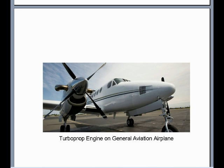Here's an example of a turboprop on a general aviation airplane. The hydraulic oil pressure is at zero, so the blade pitch is in the feather position. Should there be an engine-out condition, the blade pitch will go to feather position to minimize drag and assist in a more successful emergency landing without excessive drag.